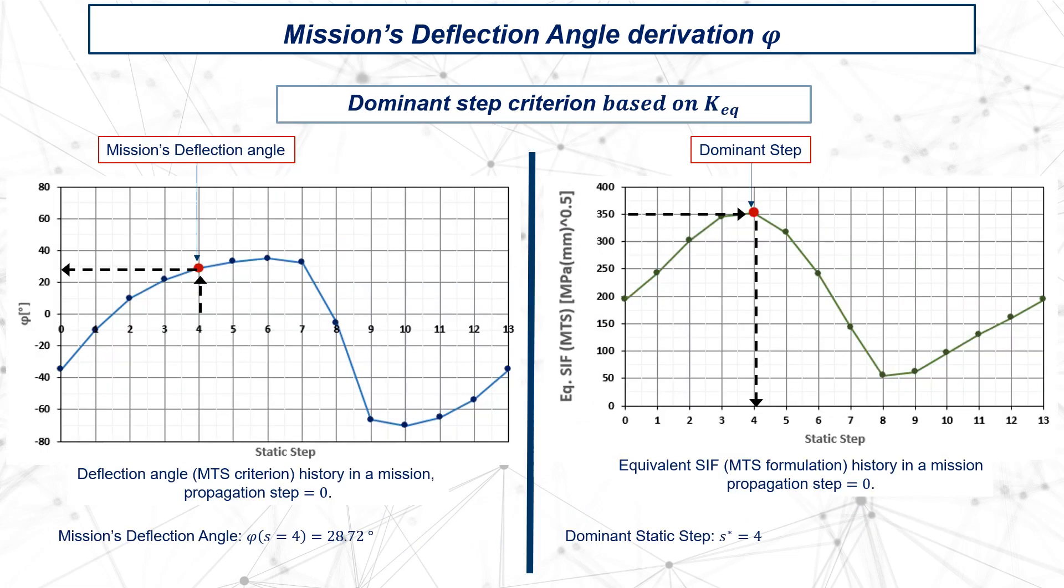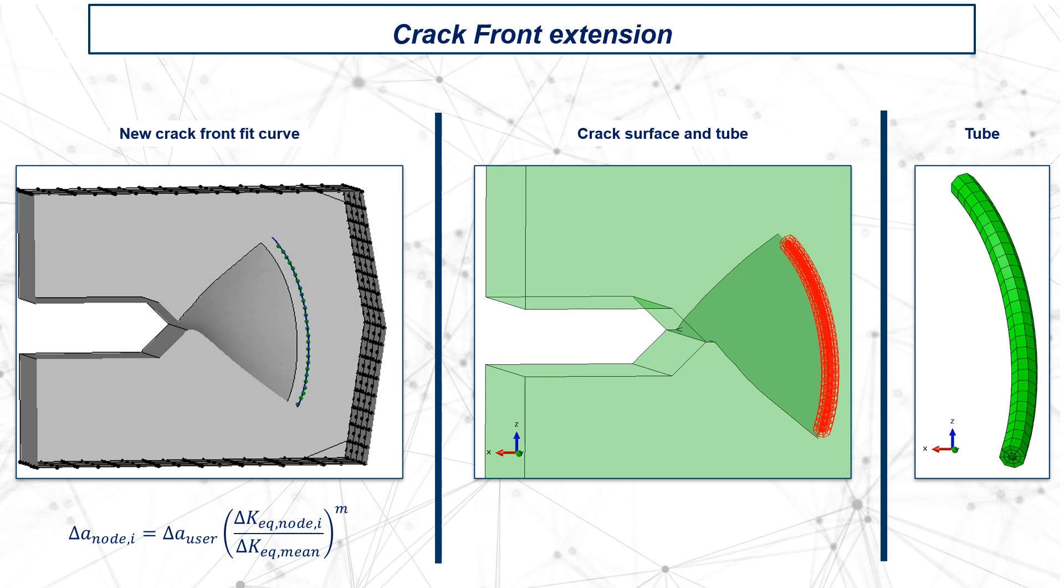This slide shows how the procedure explained before works practically. The equivalent stress intensity factor, according to the MTS criterion, is evaluated for each static step, graphed on the right-hand side. Therefore, the static step corresponding to the maximum K-equivalent is taken as reference for the mission deflection angle deviation, graphed on the left-hand side. A numerical three-dimensional crack front is a three-dimensional curve, fitting a series of extrapolated nodes. At this stage, the mission deflection angle and equivalent stress intensity factor is known for each node. The corresponding propagation increment for each node, delta A, is calculated as in the formula starting from a user-defined crack growth increment, delta A_user.